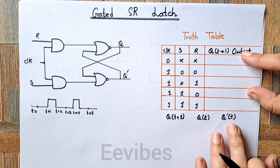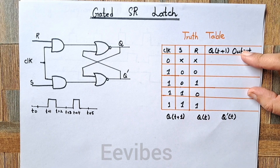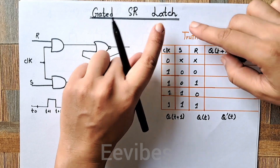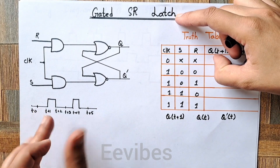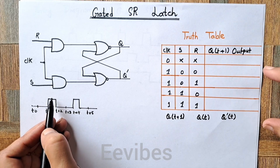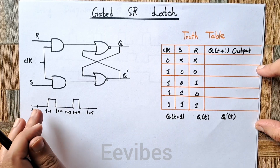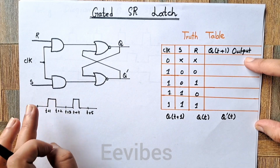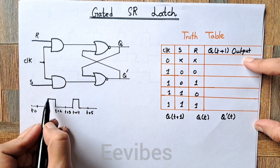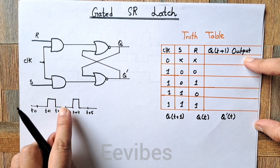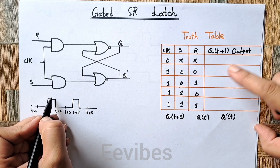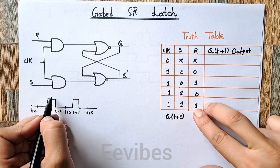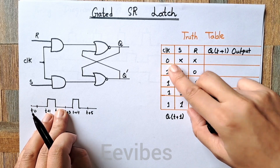Q-bar(t) is the complement of Q(t), since two outputs are produced in this circuitry. Latches are basically level-sensitive devices, which means they are designed to introduce changes at the output side only when the input or the clock signal is either positive or negative. So as long as the clock signal is positive, the inputs will be effective.